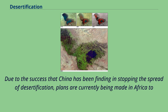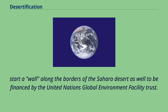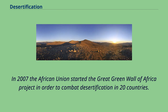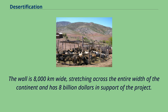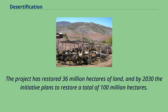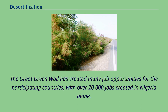Due to the success China has been finding in stopping the spread of desertification, plans are currently being made in Africa to start a wall along the borders of the Sahara Desert, to be financed by the United Nations Global Environment Facility Trust. In 2007, the African Union started the Great Green Wall of Africa project to combat desertification in 20 countries. The wall is 8,000 kilometers wide, stretching across the entire width of the continent, with $8 billion in support. The project has restored 36 million hectares of land, and by 2030 the initiative plans to restore a total of 100 million hectares. The Great Green Wall has created over 20,000 jobs in Nigeria alone.